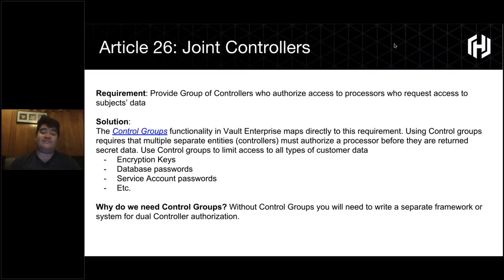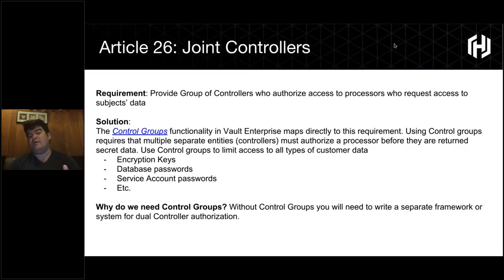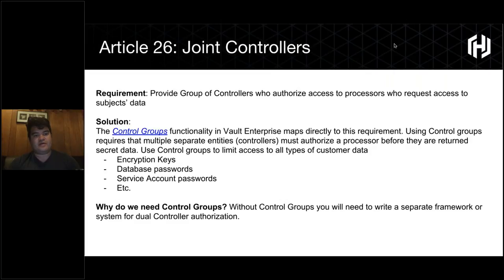Article 26 basically says there needs to be a set of controllers who stipulate access for processors to data subjects' data. We need to be able to provide least privileged access to data subjects' data during the period in which those subjects consent to their usage of data. Within Vault, there's a series of features called Control Groups — Vault Enterprise features that allow you to map access to a namespace within Vault. For example, if you have a series of user account information in dev/prod, you can stipulate that accessing any secret in that directory tree requires that an identity group of user accounts physically consents to access that information.